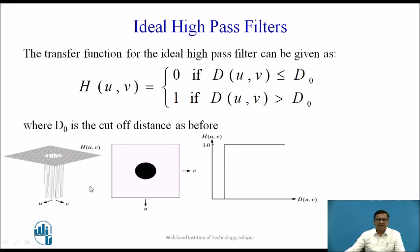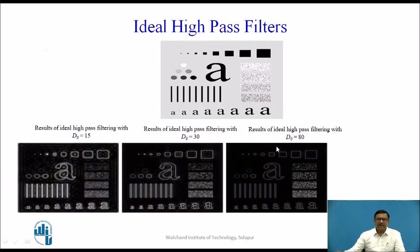The ideal high pass filter is represented in three different ways: 3D representation, image representation, and coordinate representation. The value of H(u,v) up to d0 is 0, whereas if the distance is greater than d0, H(u,v) is 1. Applying this filter on an input image with d0 = 15, d0 = 30, and d0 = 80, we can see that as d0 increases the image gets more and more sharpened. At d0 = 15 the image is not too sharp, at d0 = 30 it is sharpened, and at d0 = 80 it is more sharpened.